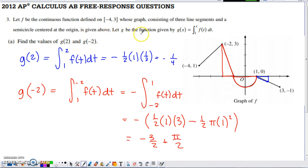G is the function defined right here. G of X is defined as a definite integral. Notice the input to G is the upper limit of integration, and the integrand in this definition is F, which is what we have a graph of. Part A asks us to find two function values for G: G of 2 and G of negative 2.